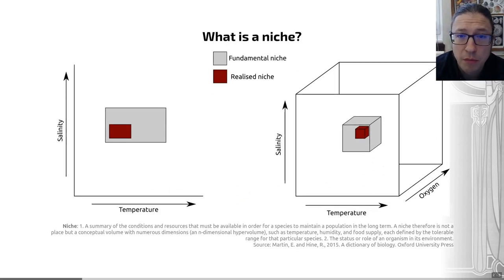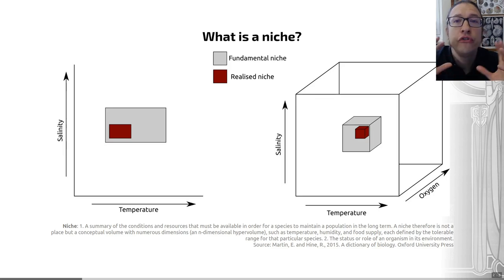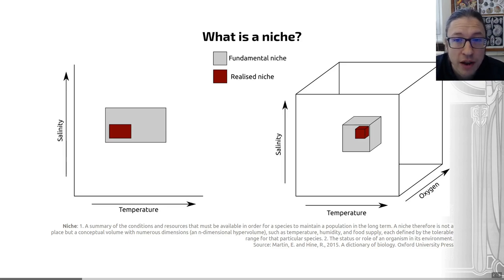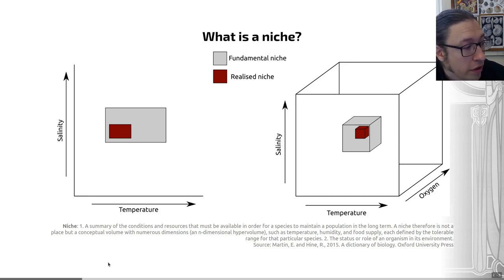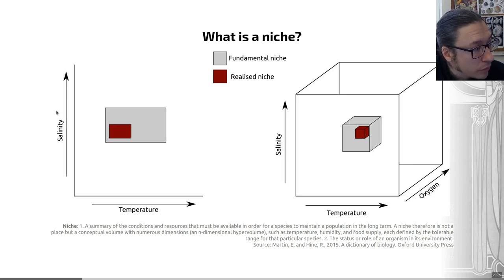Moving to a slightly more abstract concept: the ways organisms make energy, coupled with an organism's tolerance to different environmental factors, provide a notional space within an ecosystem within which a species can live. We call this a niche — an abstract and often debated concept that defines how a species interacts with its environment. A niche is a summary of the conditions and resources that must be available for a species to maintain a population in the long term.